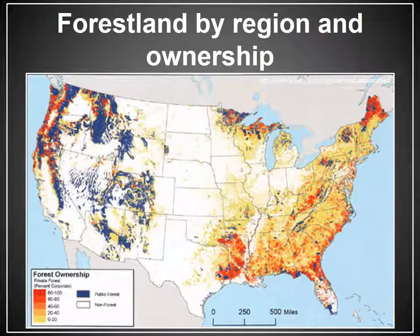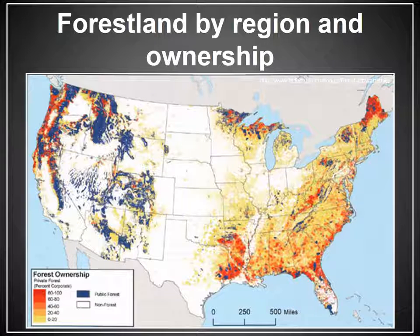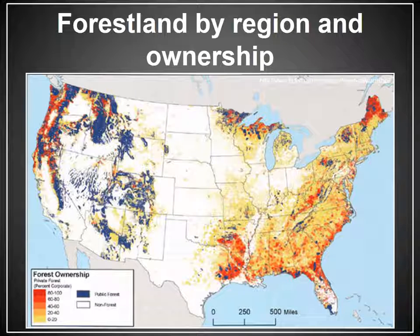This map provides an illustration of the forest land ownership pattern in the United States. All the colored area represents forest land. The yellows, oranges, and reds represent privately owned forest land, while the blue represents public agency land holdings — much of which is concentrated in the western United States. There's a pretty stark contrast between the ownership pattern in the eastern part of the country versus the western part of the country.